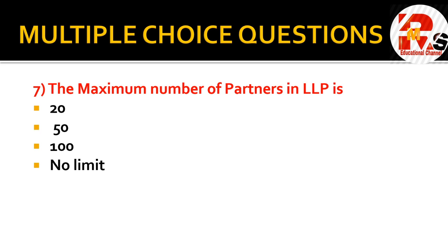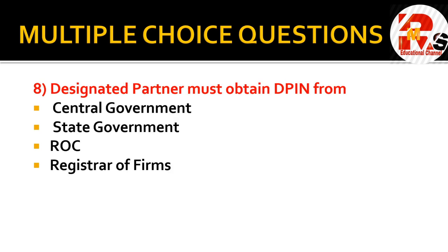The maximum number of partners in an LLP is — 20, 50, 100, or no limit? There is no upper limit on the number of partners in an LLP. So the right answer is no limit. The maximum number of partners in a Limited Liability Partnership has no limit.